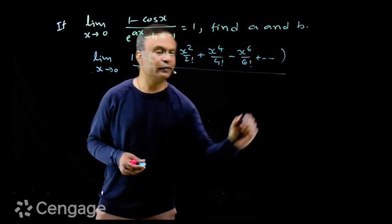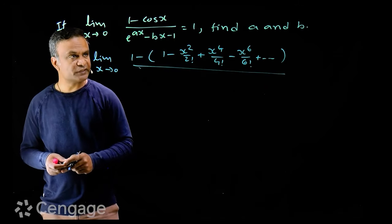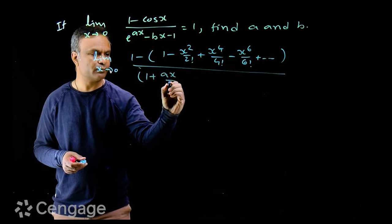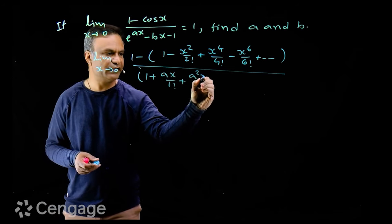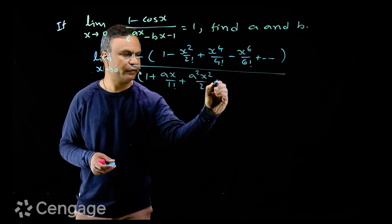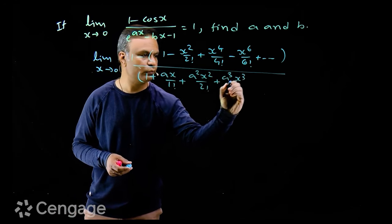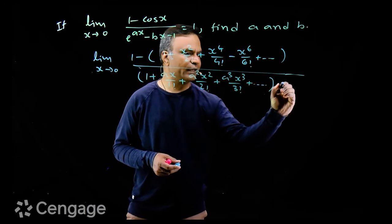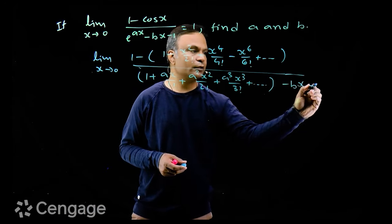This divided by the expansion of e^(ax). So we have 1 plus ax/1! plus a²x²/2! plus a³x³/3! and so on, minus bx minus 1.